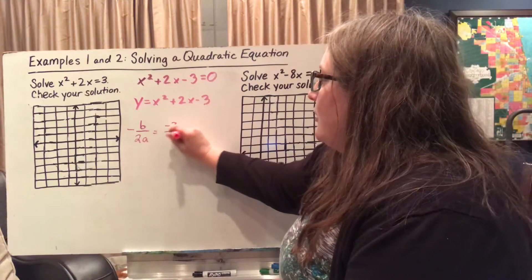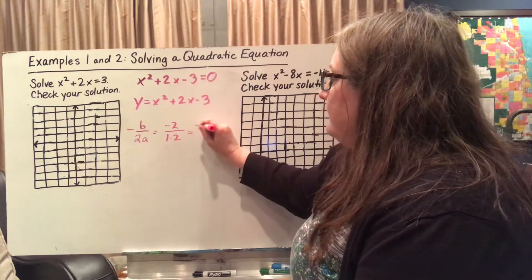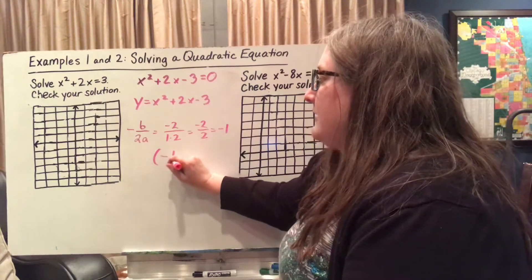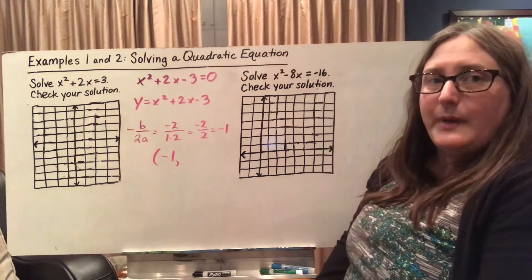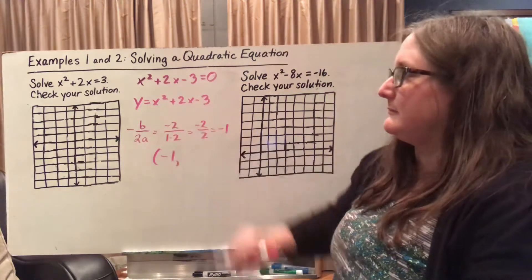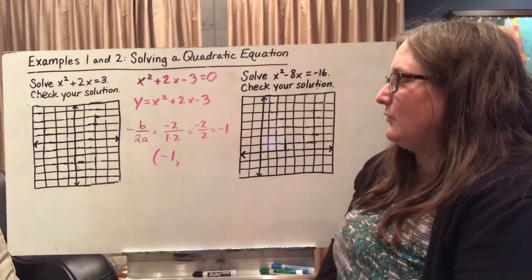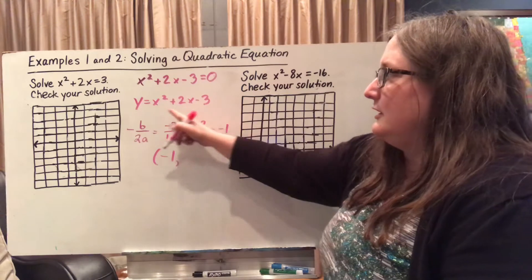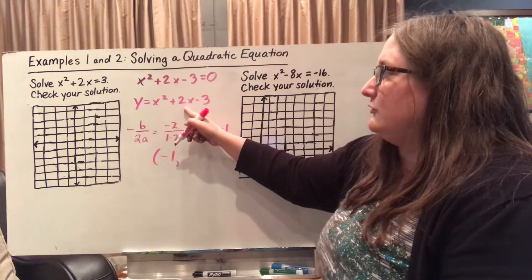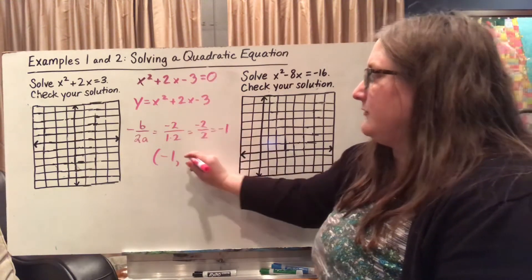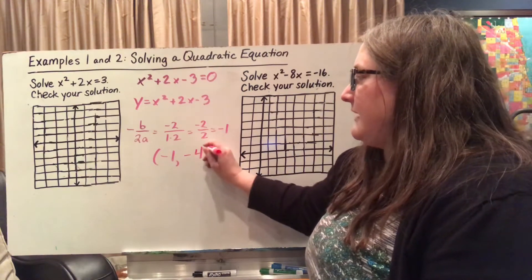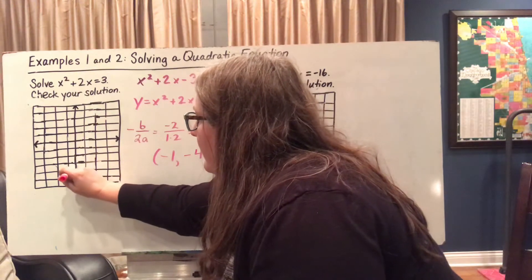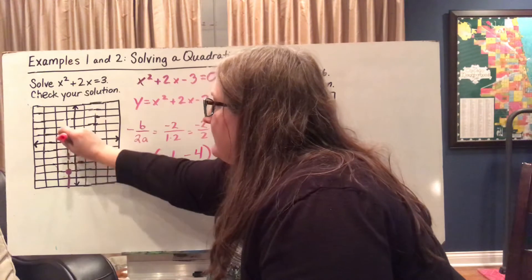So I've got negative 2 over 1 times 2, or negative 2 over 2, which gives me negative 1. So my vertex x-coordinate is negative 1. To find the y-coordinate, I plug this input back into my equation. Negative 1 squared is 1, 2 times negative 1 is negative 2, so 1 plus negative 2 gives me negative 1, minus 3 gives me negative 4. So my vertex is at (-1, -4). This is also my axis of symmetry.